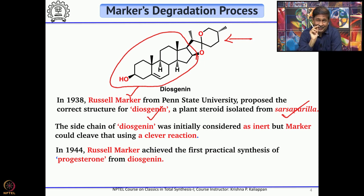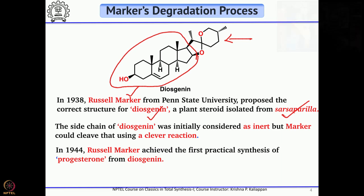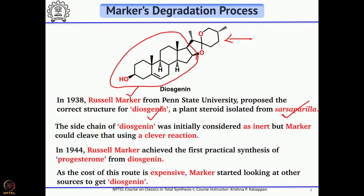Academic work and industrial work are different extremes. One is for academic interest; the other requires the whole process to be affordable and inexpensive. With that, this practical synthesis of progesterone from diosgenin was one of the best syntheses reported. However, he could not get enough diosgenin from the sarsaparilla plant, which made the process more expensive. He thought it was better to look for different sources to get diosgenin.